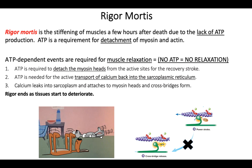Muscles are going to be stiff until they start to deteriorate. Eventually, as a few hours go by, the rigor mortis actually goes away because the muscle deteriorates, the cross bridges break, and the muscles become relaxed again. They can use rigor mortis to help determine time of death — if the body is still in a state of rigor, then that death happened fairly recently.